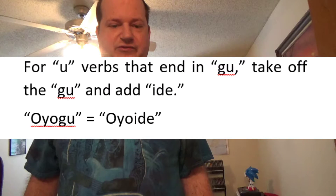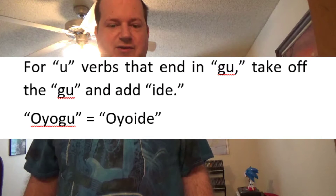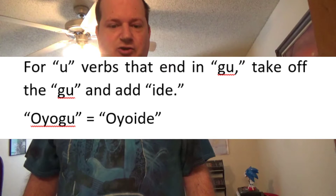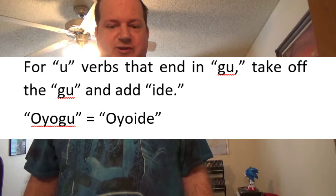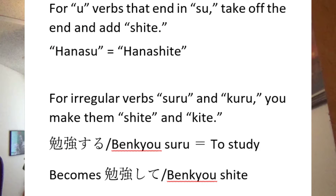For verbs which end in gu, you take off the gu and add ide. Oyogu, to swim, becomes oyoide. For u-verbs that end in su, you take off the su altogether and add shite. Hanasu, to speak, will become hanashite, not shinde.